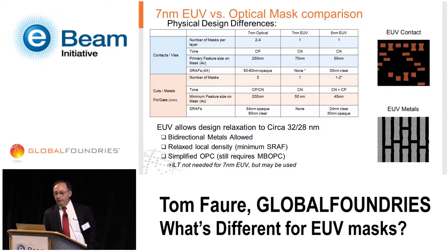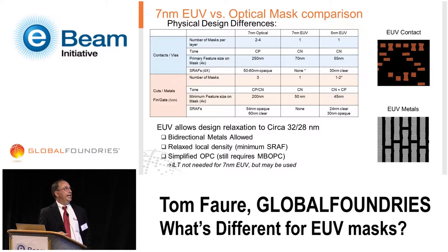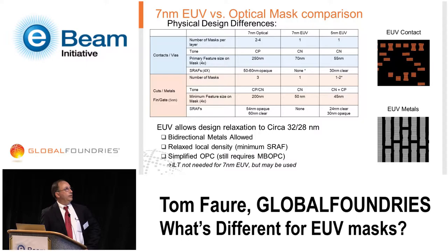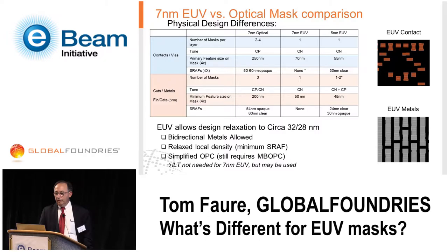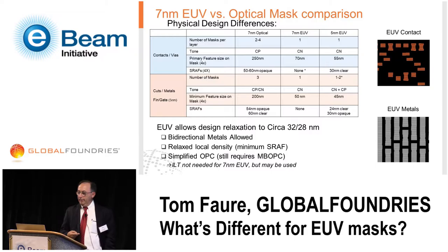Let's compare the physical mask differences between optical and EUV, looking at contacts and vias versus cuts and metals. For 7 nanometer optical contacts and vias, you're looking at 2 to 4 layers. One layer for EUV at 7, one layer for EUV when you move to 5. Optical is done NTD — bright field, correct positive mask. EUV switches back to dark field, correct negative mask. Primary feature size for optical is 250 nanometers; for EUV on the contact level at 7, it's 70 nanometers, moving to 55 nanometers at 5. SRAFs for the optical solution are on the order of 50 to 60 nanometers — opaque pillars. At GlobalFoundries we do not see the need for SRAFs on the contact hole mask at 7, though they are needed at about 30 nanometers for the 5 nanometer solution.